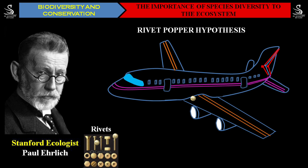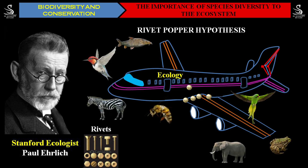Now consider that each and every rivet used to make this airplane is a golden rivet. Many golden rivets are used to fix all the spare parts of the plane. He says: let us now consider the ecosystem — what you observe in your surroundings, like trees, birds, animals, insects, fish, honeybees, amphibians — all these are parts of the ecosystem. Now consider each and every species in the ecosystem as one of the rivets in the airplane.